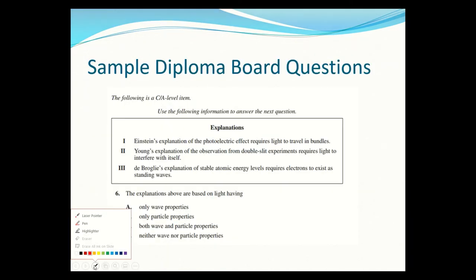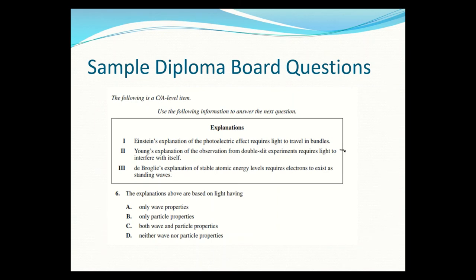Let's go through some sample diploma questions on this material. The information given: Einstein's explanation of the photoelectric effect requires light to travel in bundles (particle); Young's double-slit experiment requires light to interfere with itself (wave); de Broglie's explanation of stable atomic energy levels requires electrons to exist as standing waves (wave). So light has both wave and particle properties — the answer is C.